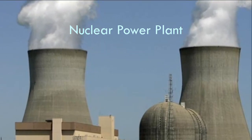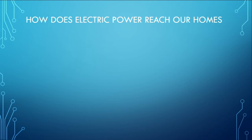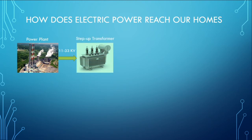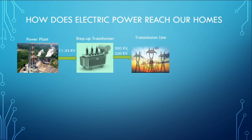Coming back to our main topic, the power plant generates electric power normally in the voltage range of 11 kV to 33 kV. This power is then fed to a step-up transformer, which steps up the input voltage to 500 kV or 220 kV depending upon the distance of the transmission line. This is not actually just a simple transformer, but a whole substation at the generation side.